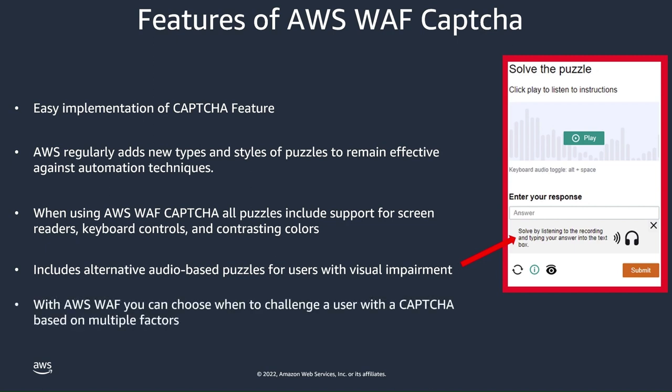With AWS WAF, you can choose when to challenge a user with a CAPTCHA based on multiple factors. For example, you can require CAPTCHA challenges for requests based on the rate limit, labels generated from AWS managed rules like AWS WAF Bot Control, the Amazon IP reputation list, and other attributes such as the URI path, header, and HTTP method. This also allows you to configure AWS WAF rules to require CAPTCHA challenges for specific resources frequently targeted by bots, such as login pages, search, and form submissions.